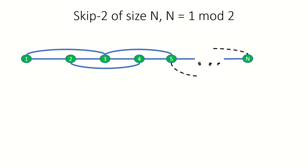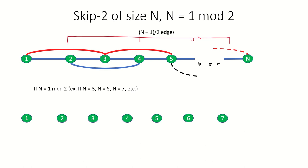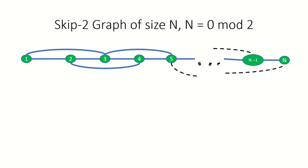Now consider the general skip 2 graph of size n. If n is odd, or in other words if n is 1 mod 2, we can reach the last vertex from the first vertex in n minus 1 over 2 steps. You can think of it as taking the difference between an odd number and 1 and then dividing by 2 to find the number of times 2 must be added to 1 to get our original odd number.